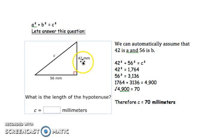So 42 squared plus 56 squared equals c squared. I just substituted 42 as a and 56 as b.